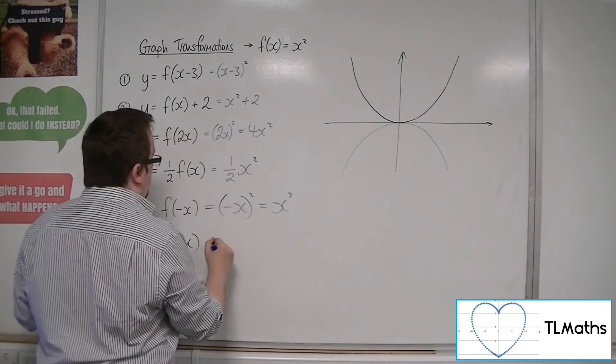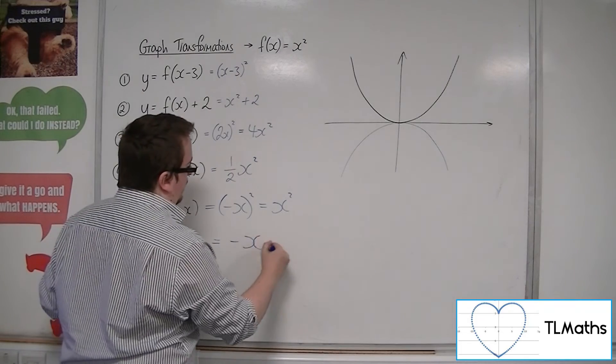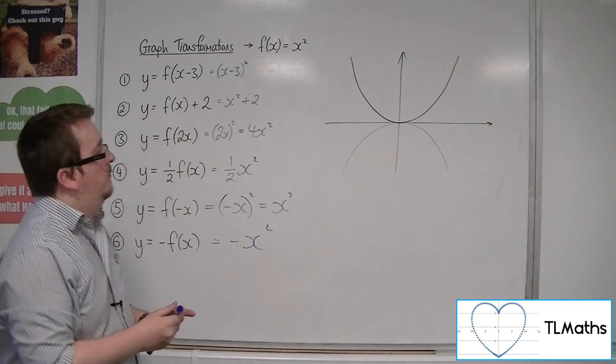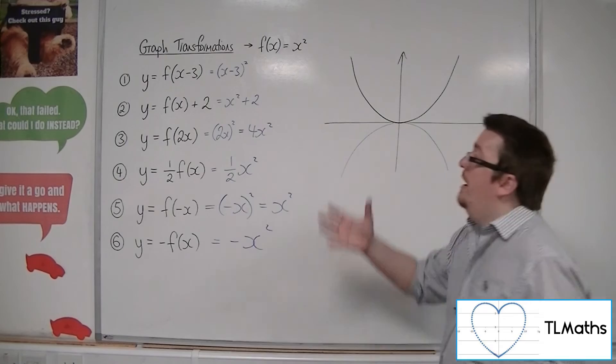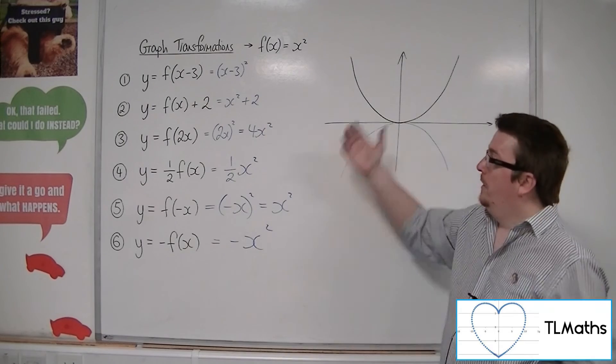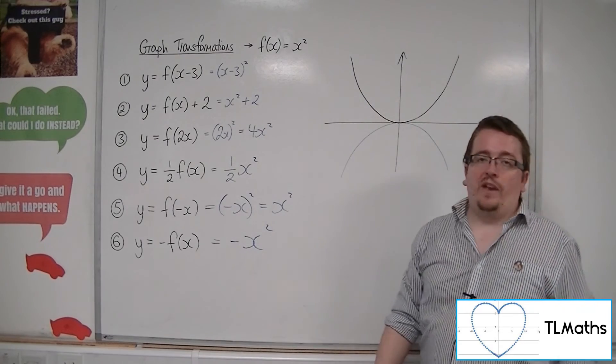And because you've put minus outside of f of x, this is minus x squared. And that is how we can transform the curve f of x equals x squared.